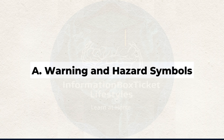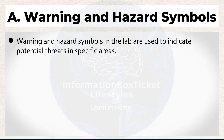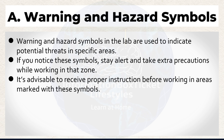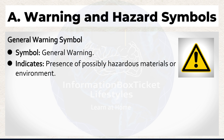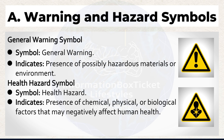A. Warning and Hazard Symbols in the Lab. These symbols are used to indicate potential threats in specific areas. If you notice these symbols, stay alert and take extra precautions while working in that zone. It's advisable to receive proper instruction before working in areas marked with these symbols. General Warning symbol indicates the presence of possibly hazardous materials or environment. Health Hazard symbol indicates the presence of chemical, physical, or biological factors that may negatively affect human health.